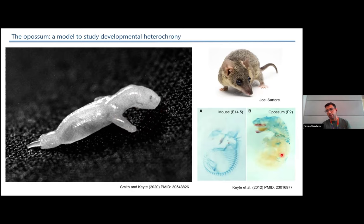So again, in this work, we could see that a newborn opossum at postnatal day two, in the staining of bone and cartilage, they have much more mature tissues in the anterior part than in the posterior.